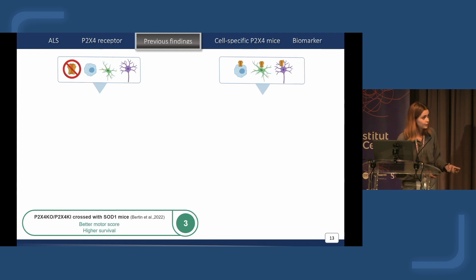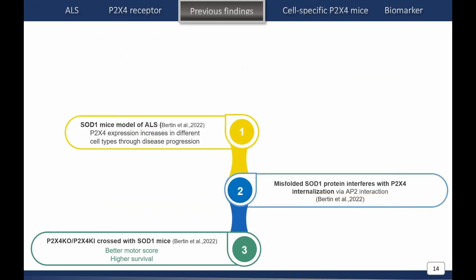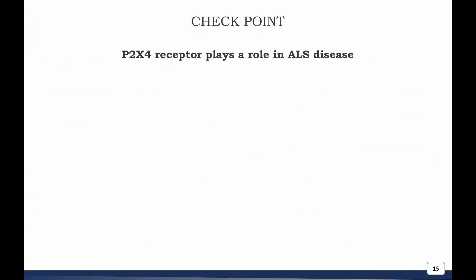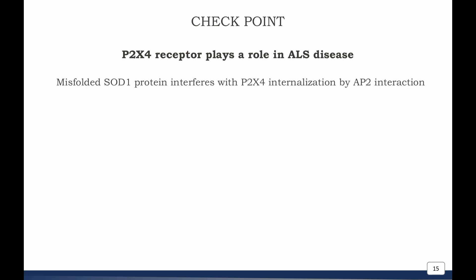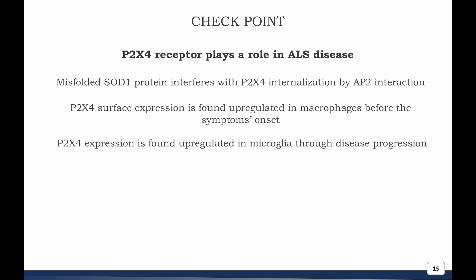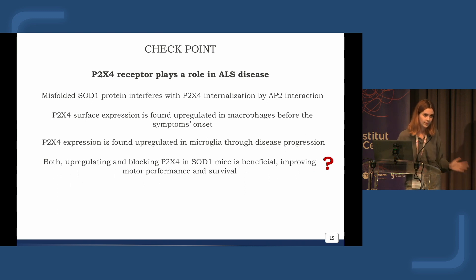We found surprisingly that both increasing the surface expression of P2X4 and blocking it led to improved motor performance — less time to reach the platform and more animals able to swim at later stages. This paradoxical result was also reflected in survival, as both genotypes — increasing and blocking P2X4 — led to higher survival. This research has been recently published in Cellular and Molecular Life Sciences.